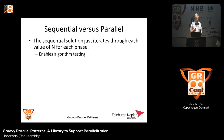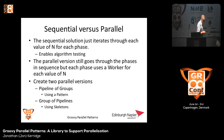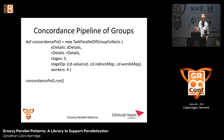Sequential versus parallel: the sequential solution iterates through each value of N for each phase, enabling you to test your algorithm. The parallel version still goes through the phases, except each phase uses a worker for each value of N. We're going to create two parallel versions: a pipeline of groups and a group of pipelines. I've created a pattern called task-parallel-of-group-collects. I have an emit, a collect, three stages — the value list, the indices map, and the words map — and four workers, giving 12 processes effectively, then I run it.